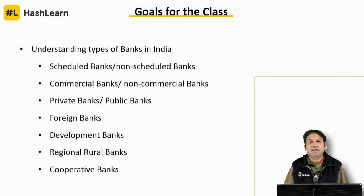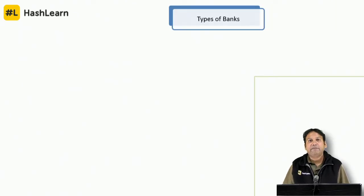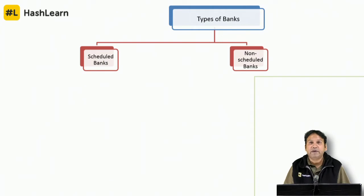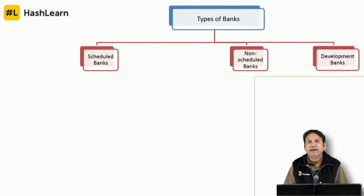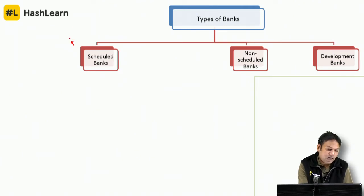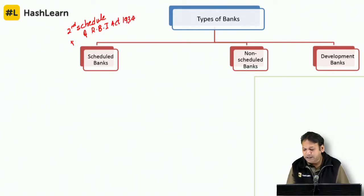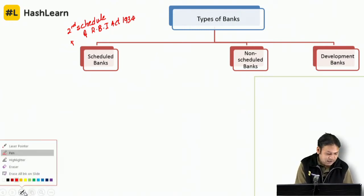We will go through a graphic representation of the different types of banks in our country. When you categorize banks at the first level, there are three types: scheduled banks, non-scheduled banks and development banks. Scheduled banks are those listed in the second schedule of the Reserve Bank of India Act 1934 — that is why they are called scheduled banks. RBI act was passed in 1934 and RBI came into existence in the year 1935.